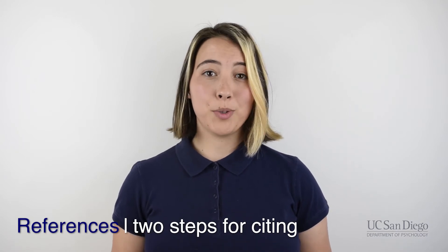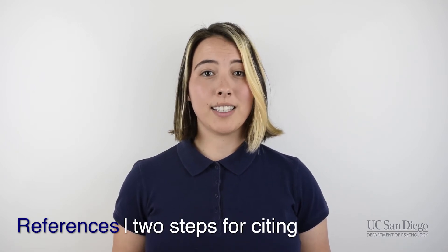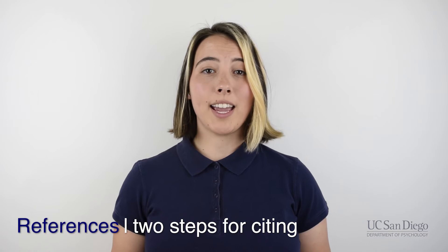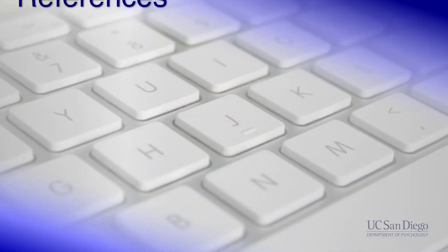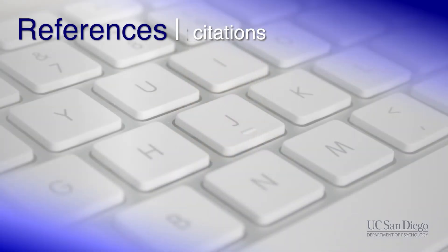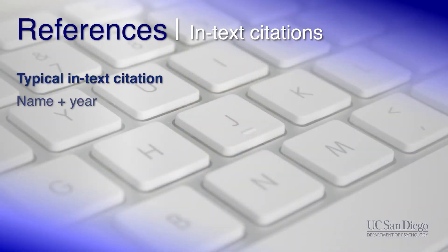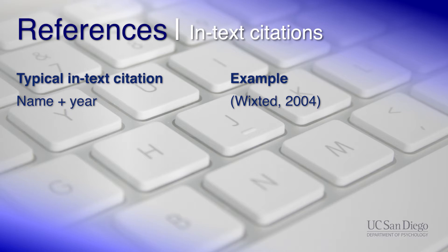There are two steps to do that: in-text citation and the references section. To add in-text citation, you should use the last name of the author or authors of the article and the publication date, all within parentheses. Place that citation at the end of the relevant sentence or clause.